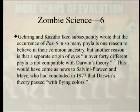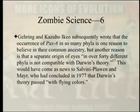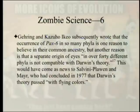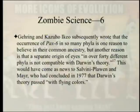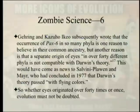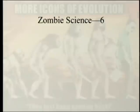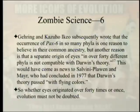Gehring and Ikeo subsequently wrote that Pax-6's occurrence in so many phyla is one reason to believe in common ancestry, but also that a separate origin of eyes in over 40 different phyla is not compatible with Darwin's theory. This would have come as news to Salvini-Plawen and Mayr, who had concluded in 1977 that Darwin's theory passed with flying colors. So which is it? Obviously, whichever conclusion does not destroy evolution. Whether eyes originated over 40 times or once, evolution must not be doubted.